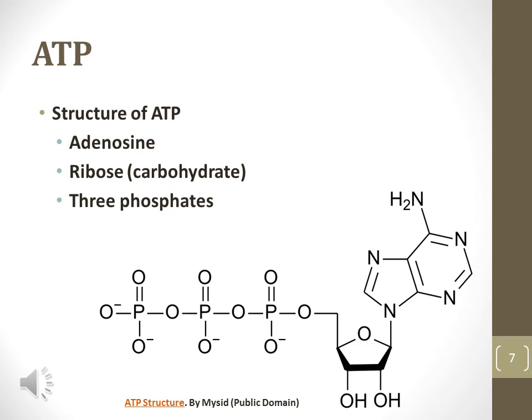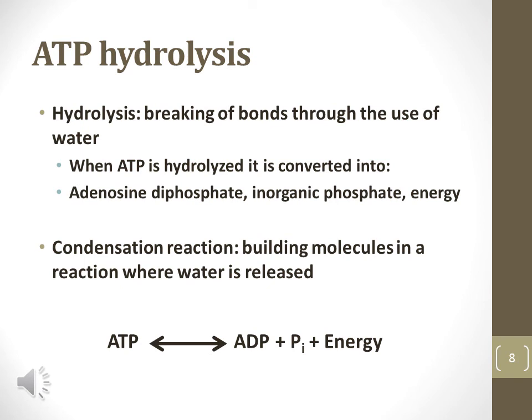ATP, or adenosine triphosphate, is a nucleotide that is used for energy. ATP is made of adenosine, ribose, and three phosphates. Hydrolysis is the process that splits a water molecule in order to break bonds between covalently bonded atoms. ATP is the energy currency of the cell. ATP is produced as a product of cellular respiration when sugar is broken down. One of the three phosphate groups is broken off of the ATP to produce adenosine diphosphate, or ADP, an inorganic phosphate, and the release of energy.